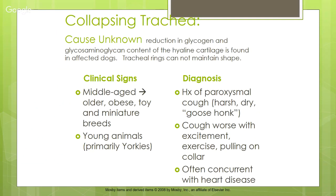In young animals it's primarily Yorkies, likely a genetic condition with lower levels of glycogen and glycosaminoglycan in the hyaline cartilage. Diagnosis involves a history of paroxysmal, harsh, dry cough that sounds like a goose honking — you'll hear yourself making this sound in an exam room with a client. Both collapsing trachea and kennel cough can produce this sound, so we need to differentiate between the two.